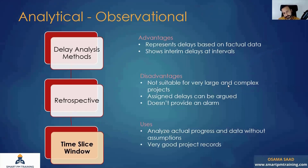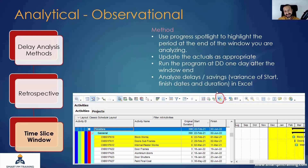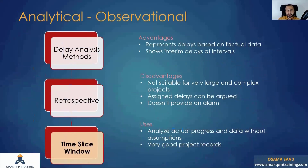Advantages: it represents delays based on factual data — no assumptions, no hypothetical fragments like 90 days of material delivery that may actually take less. It also shows intervening delays at intervals using the window approach. However, it is not suitable for very large and complex projects. Just for one window with a few activities it takes significant effort. Imagine 10,000 activities across 24 windows for a 24-month project — the volume of work involved is enormous.